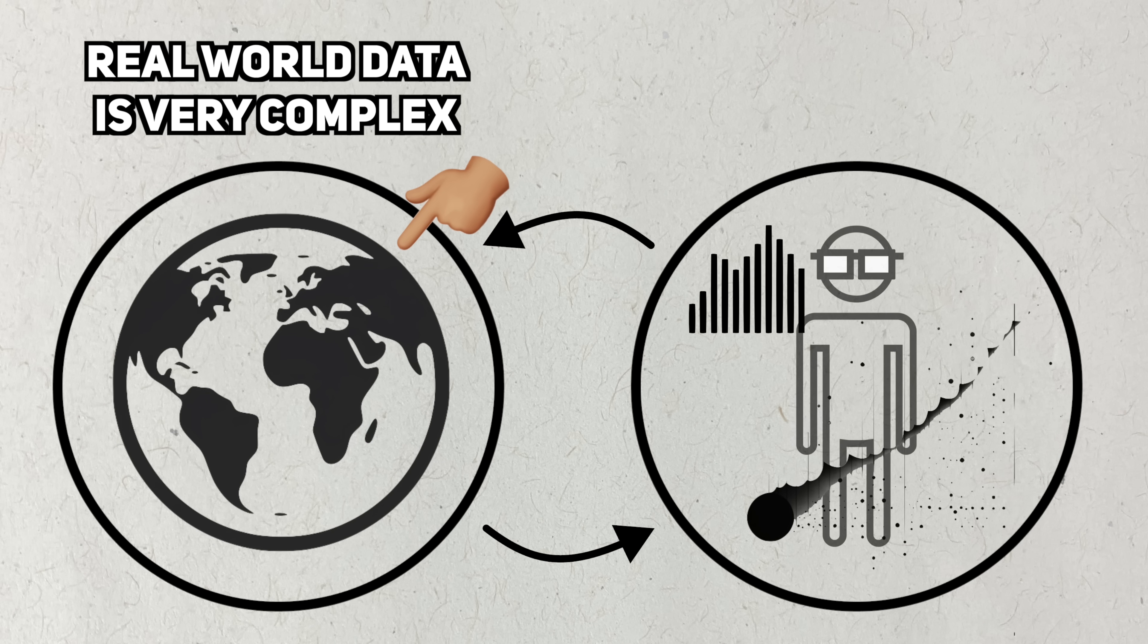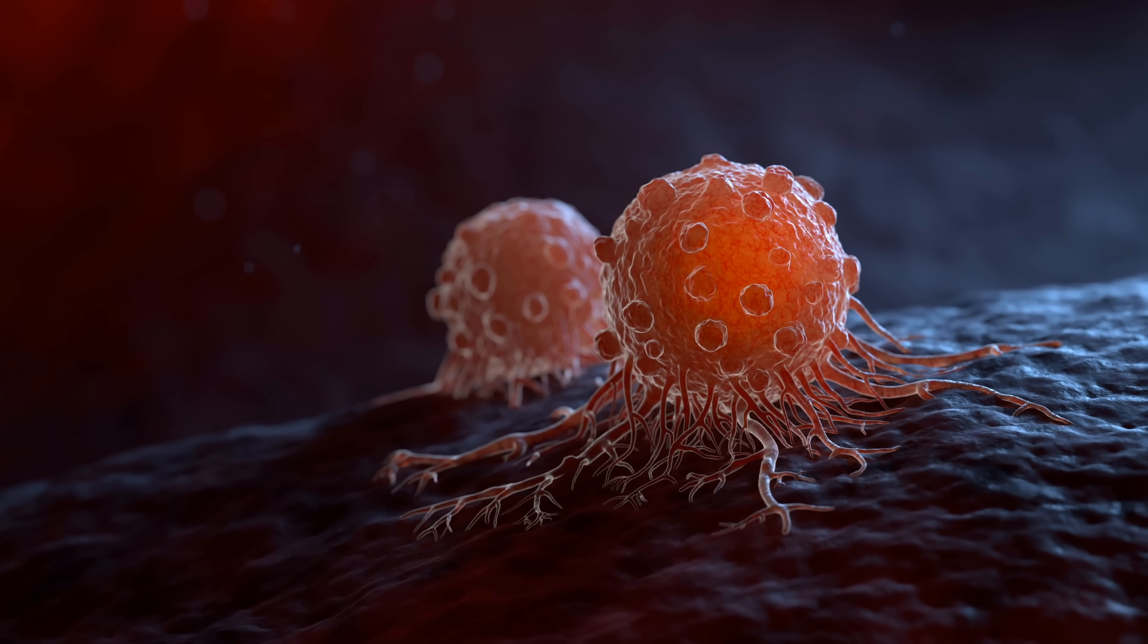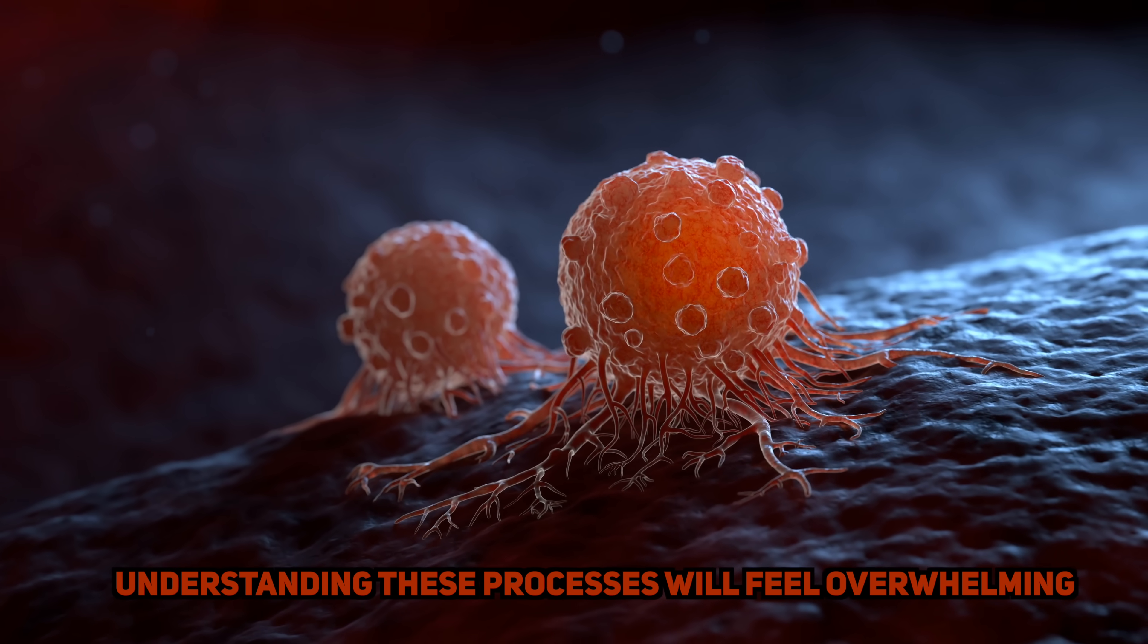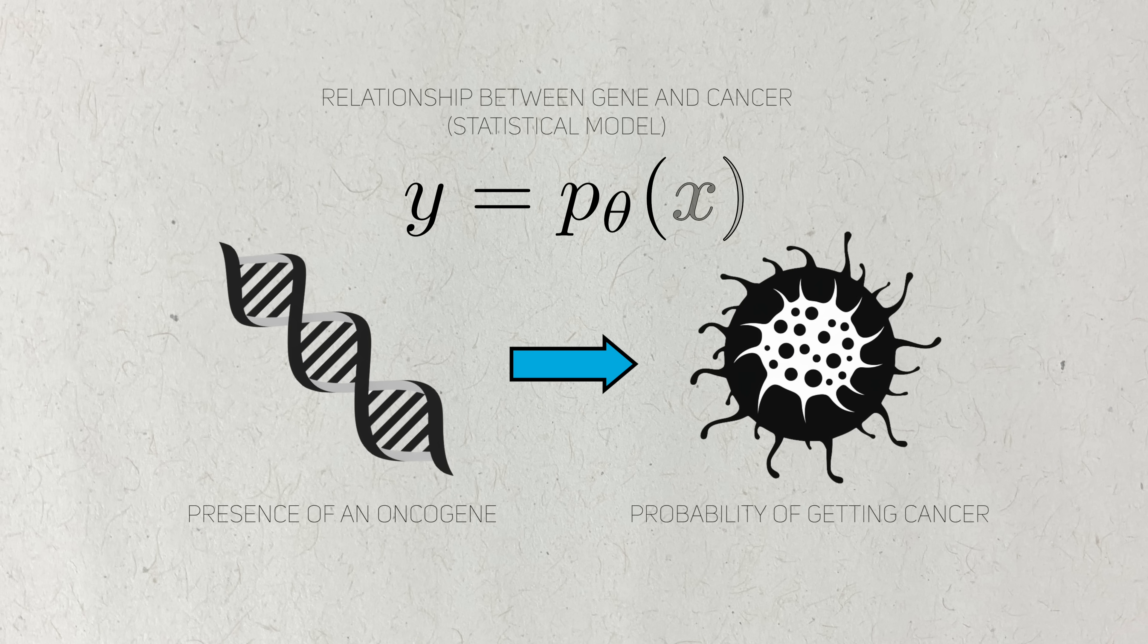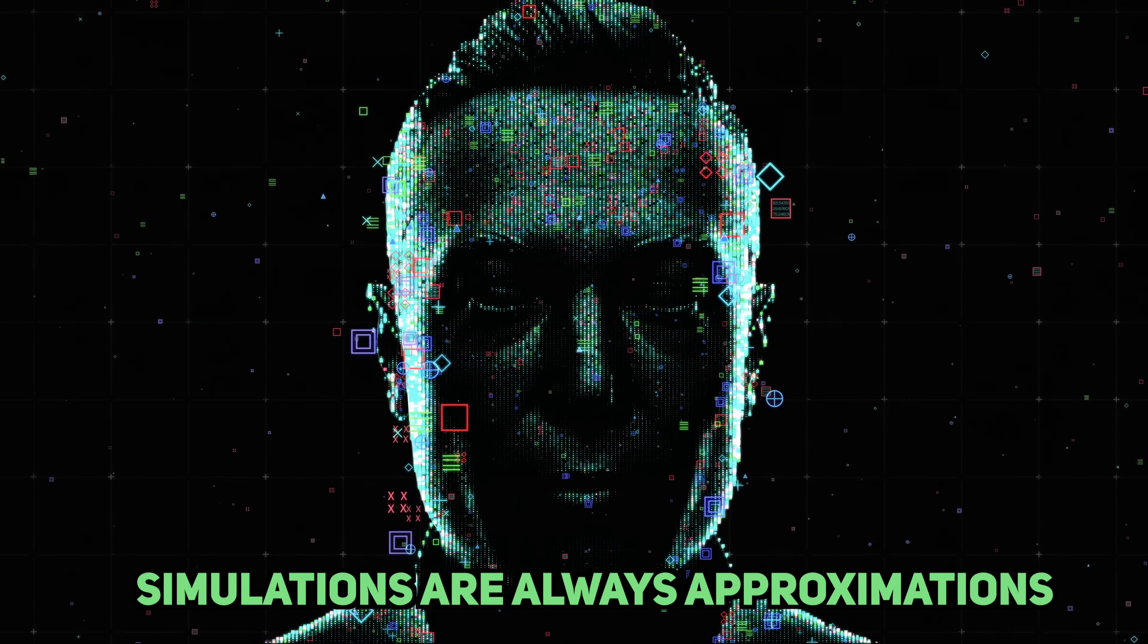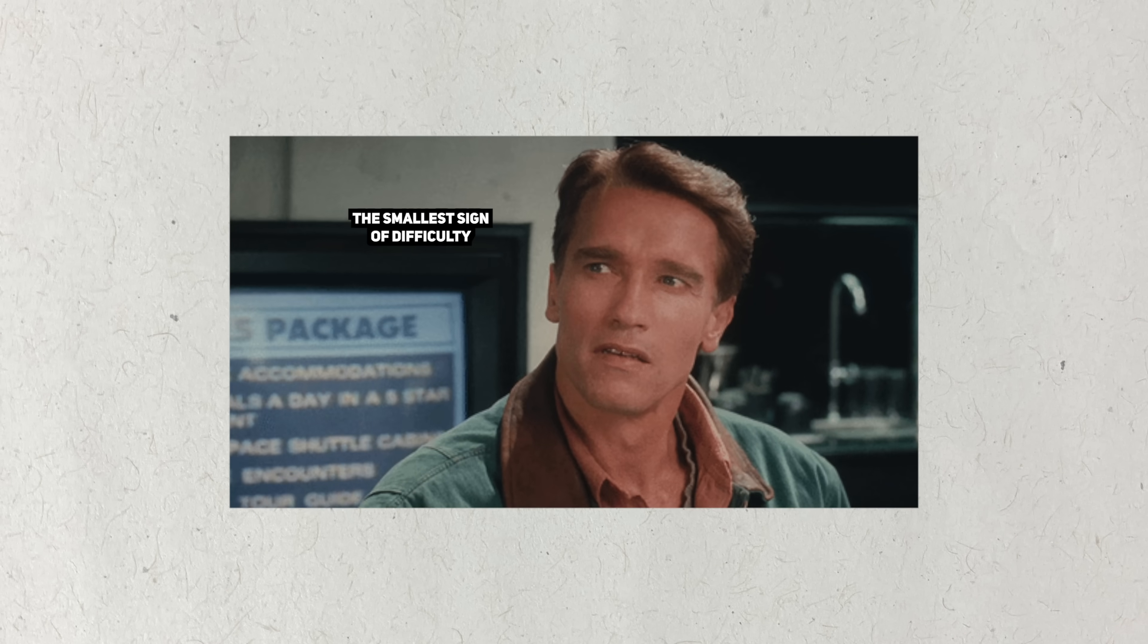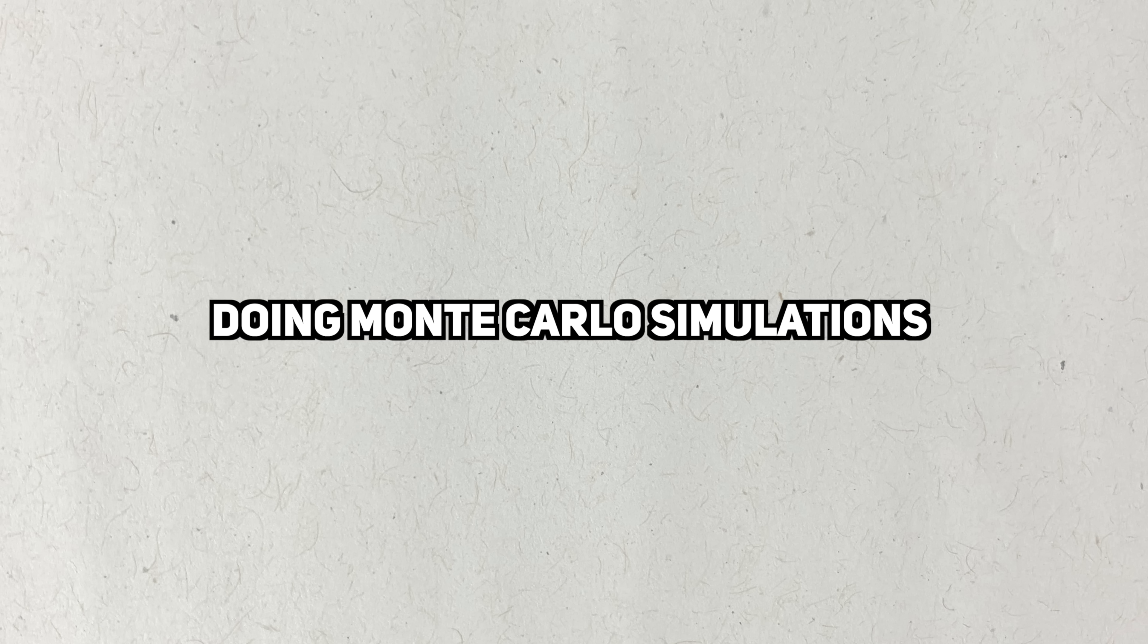Most things we see in the real world arise from incredibly complex processes. For example, cancer is the result of the interaction of multiple genes, lifestyle, and experiences. It's so complex that we may feel like it's an insurmountable challenge to figure out. But by modeling these processes with simpler probability distributions, we can learn a little bit more about cancer. Simulations are almost always approximations, and that's something we have to keep in mind. But it's better than throwing up our hands and not trying at all.